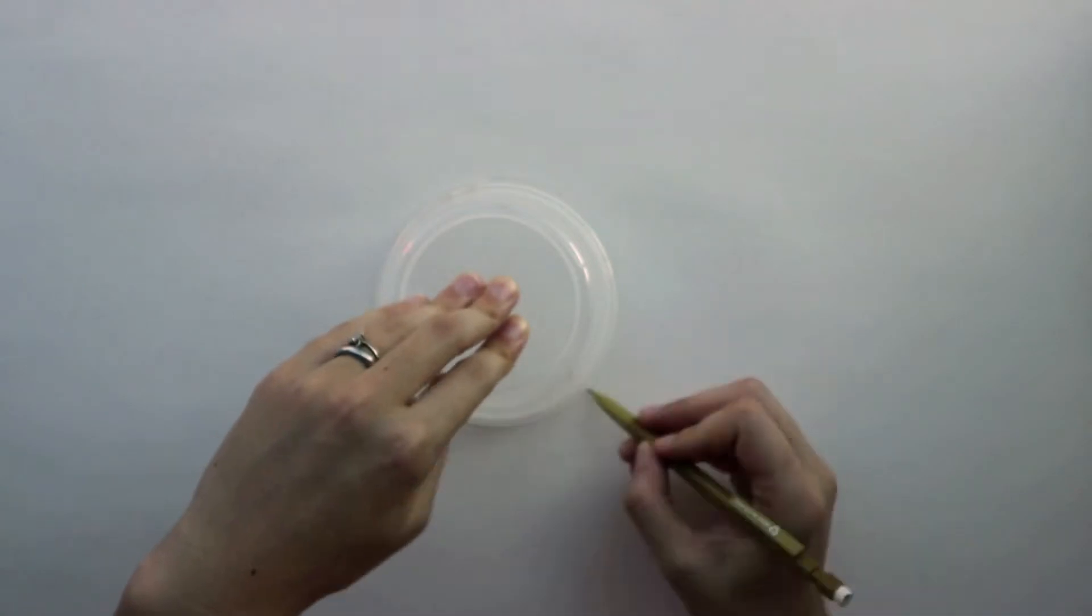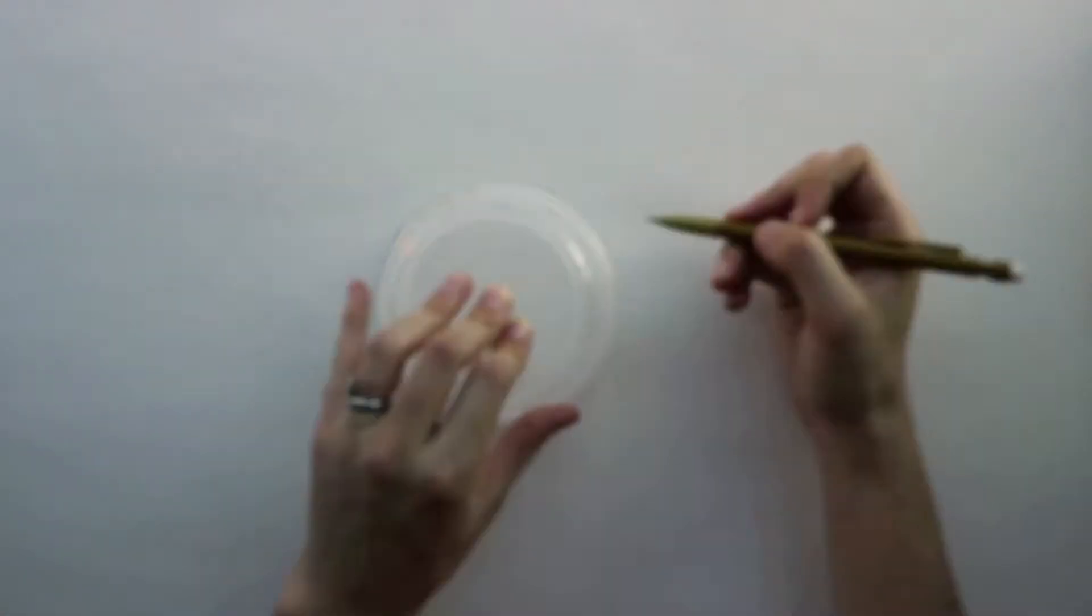Using a compass or round objects, trace two circles. They will guide you for the patterns.